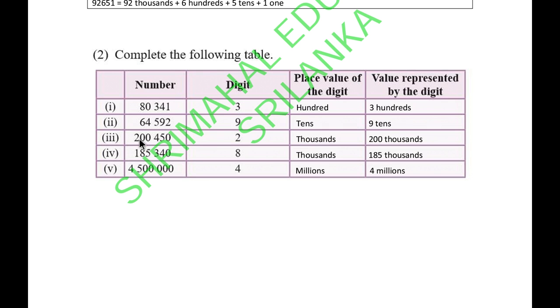The 2 is in the thousands position, representing 200 thousands. The 8 is also in the thousands position - it should be 80 thousands. In the next number, it's in the millions position, representing 4 millions.